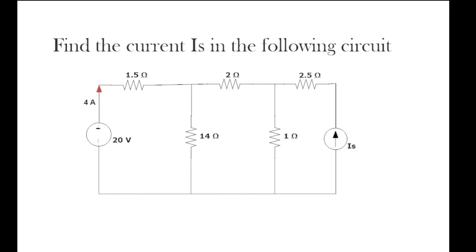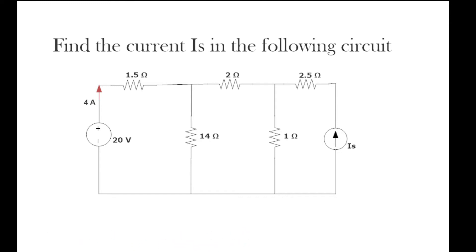Welcome to Learning to Engineer. In today's video we will understand the application of Kirchhoff's current and voltage law in this circuit. We have to find the current IS that is supplied by the current source. We can also verify our answer by using the law of power conservation. The power supplied by both the 20-volt voltage source and the current source IS should be the same as the power acquired by all the resistors present in the circuit.